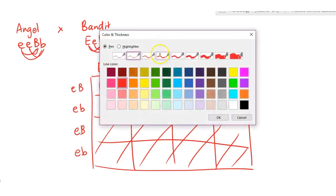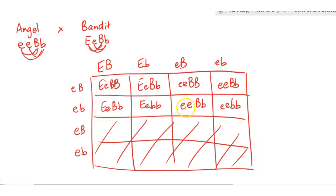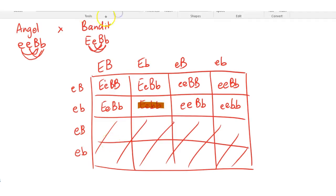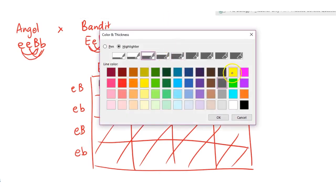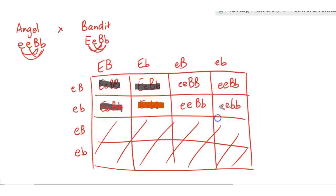Looking at the offspring results: browns are those with a dominant E gene and little b little b — that's the only brown combination. Blacks are those with a dominant E gene and at least one big B gene. The remaining offspring with recessive little e little e are golden in color. Among the goldens, some will have a brown nose — little b little b — and others will have a black nose — at least one big B.